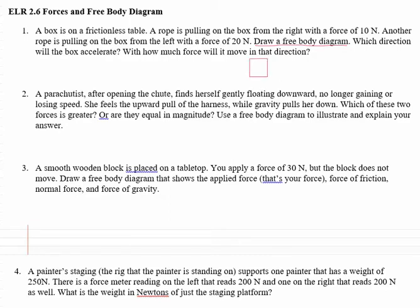We have a box sitting on a frictionless table and that box is being pulled from the right with a force of 10 newtons, and another rope is pulling on the box from the left with 20 newtons. For free body diagrams, it doesn't matter if you decide to point your arrows into the box or away from the box.